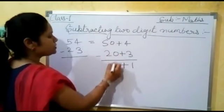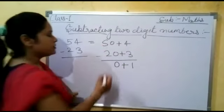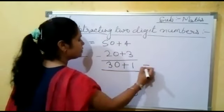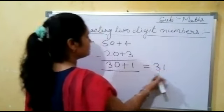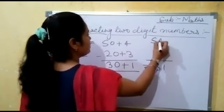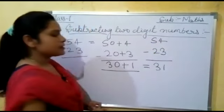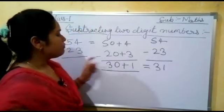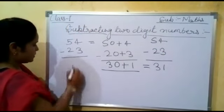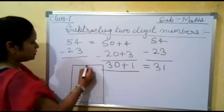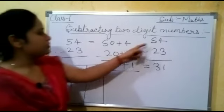Now 0 minus 0 becomes 0, and 5 minus 2 becomes 3. So here we have 30 plus 1, and the answer is 31. It means when we subtract 54 minus 23, our answer is 31. In this way we can subtract two-digit numbers.